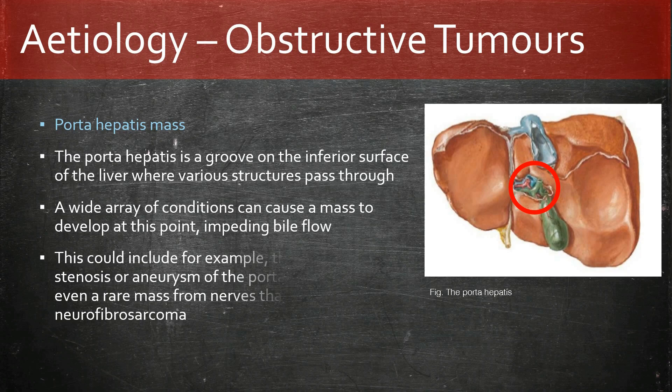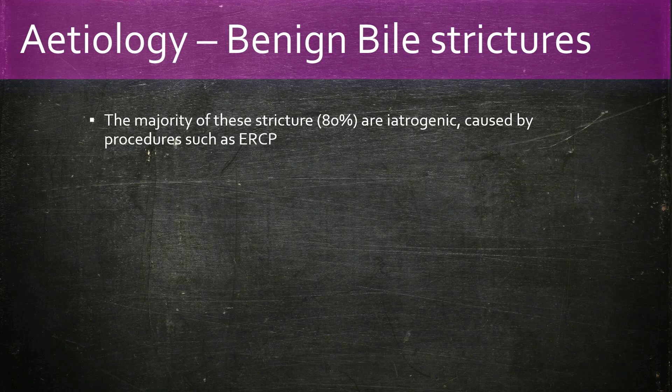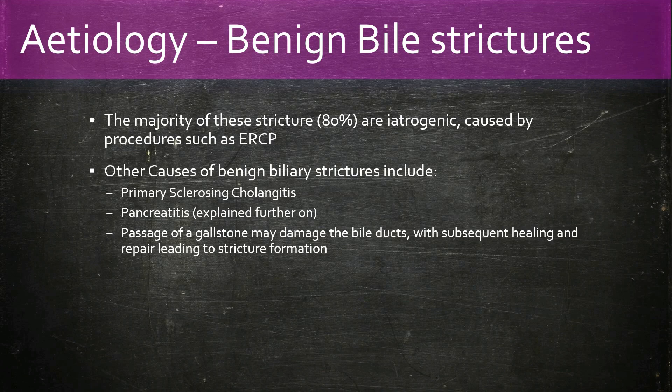The majority of benign bile strictures are iatrogenic, caused by ERCP causing damage to the biliary system, with subsequent repair and scarring resulting in stricture formation. Other causes of strictures include primary sclerosing cholangitis and pancreatitis, which can also damage the bile ducts leading to stricture formation.